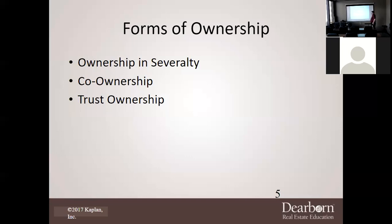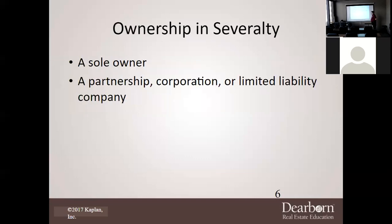Co-ownership — how many owners? Two or more; they could be as small as two or as many as you like. Trust ownership means the property is being held in trust. Ownership in severalty is a sole owner, and it could be a partnership, a corporation, or a limited liability company.